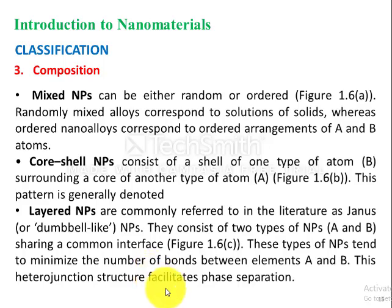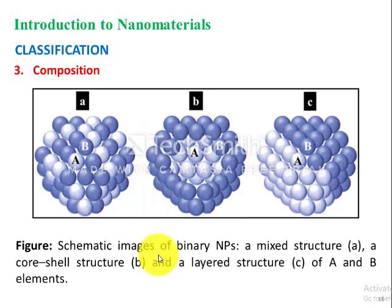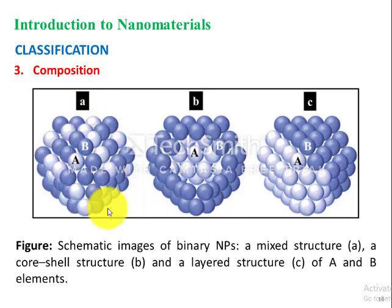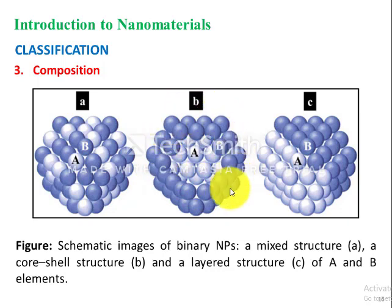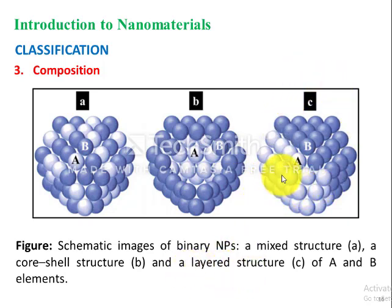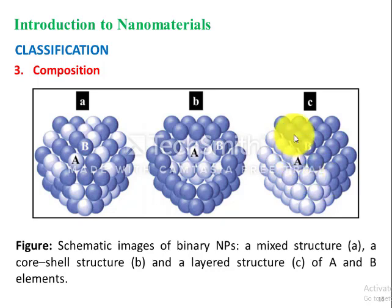Layered nanoparticles, commonly referred to in the literature as Janus nanoparticles, consist of two types of nanoparticles A and B sharing a common interface, as shown in Figure 1.6C. These nanoparticles tend to minimize the number of bonds between elements A and B. This heterojunction structure facilitates phase separation. In Figure 1.6, the A panel shows mixed-structure nanoparticles with A and B atoms randomly arranged. Figure B shows core–shell structure where B atoms form the shell and A atoms are embedded in the core. Figure C shows layered structure where A atoms form one continuous layer and B atoms form a second continuous layer.